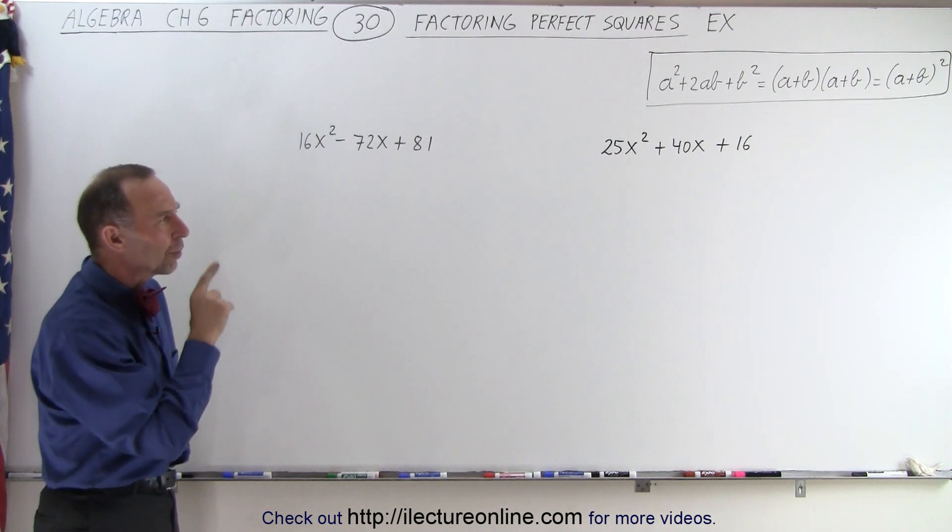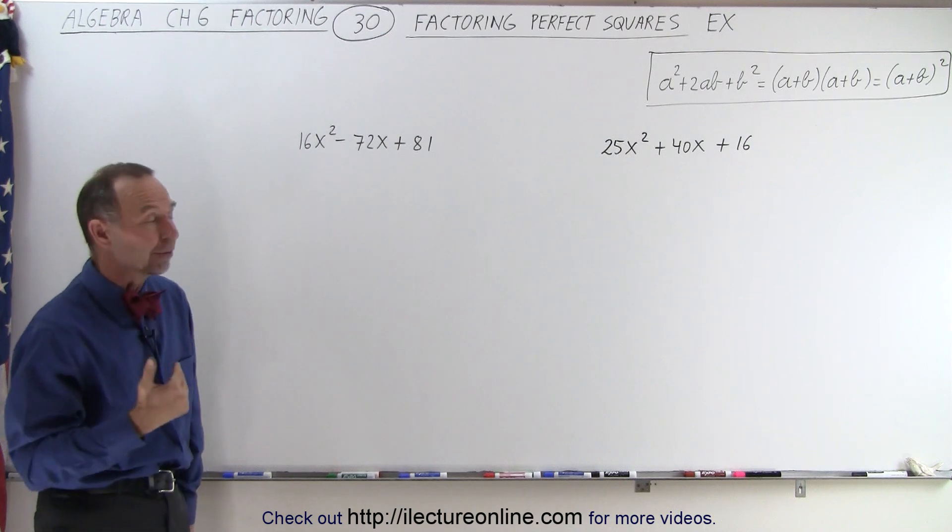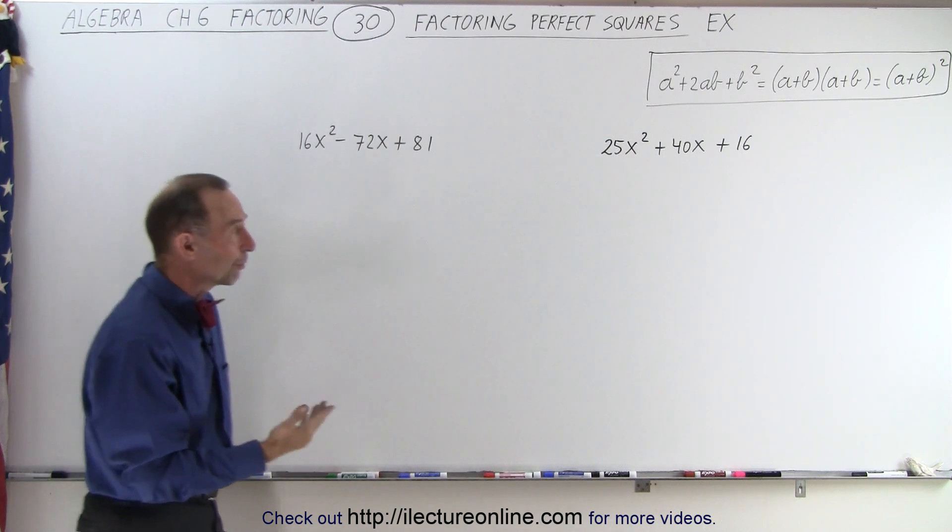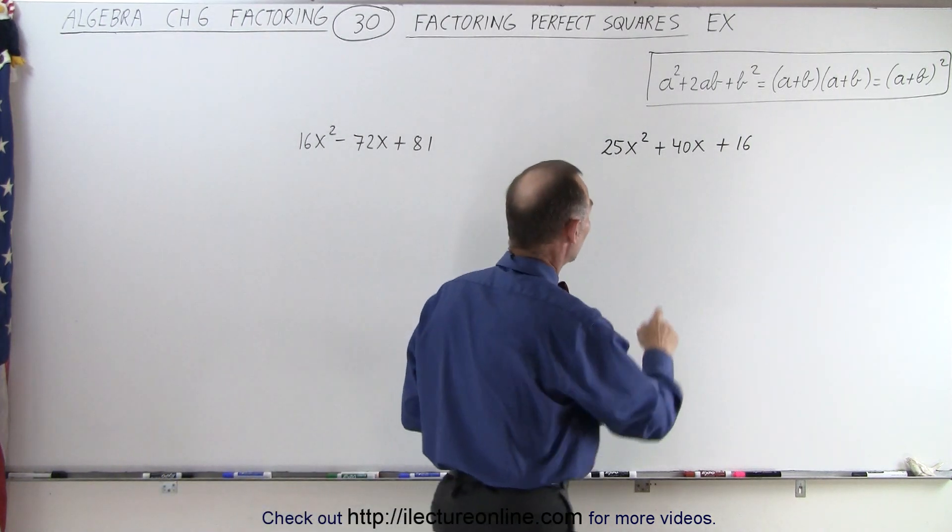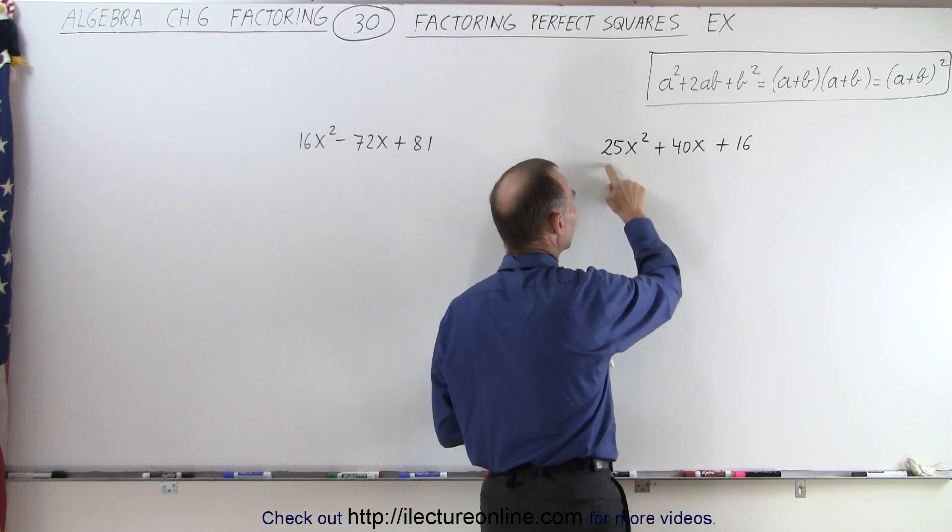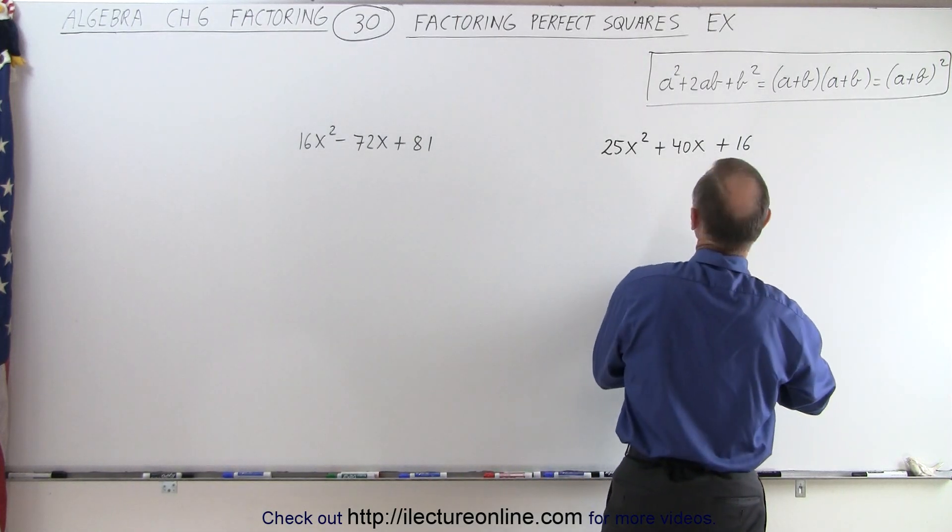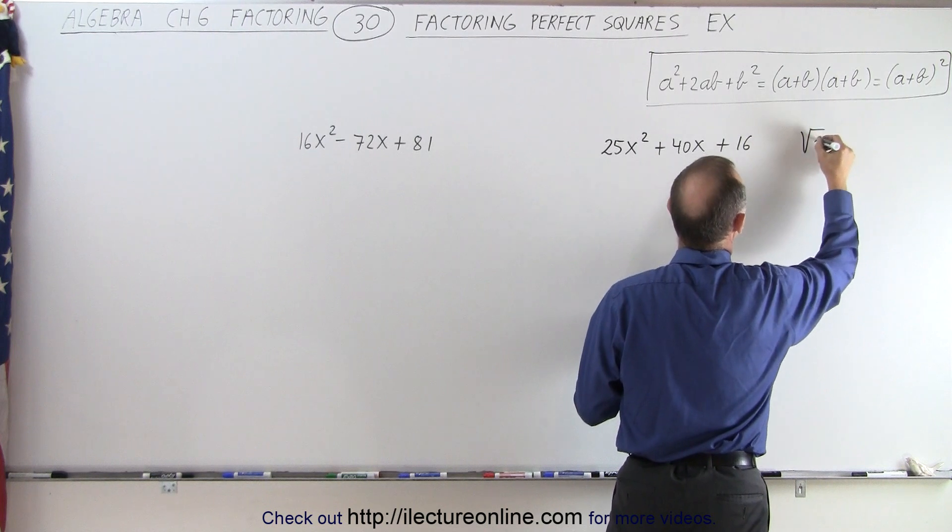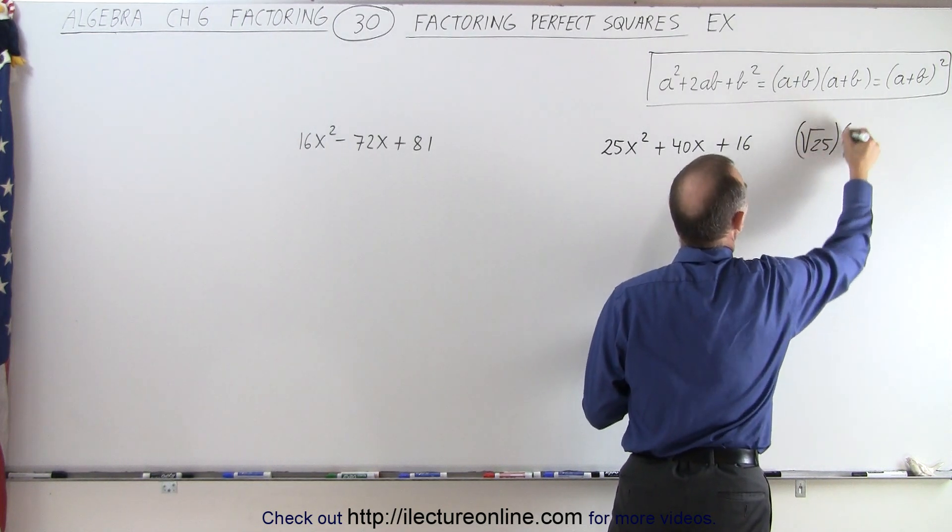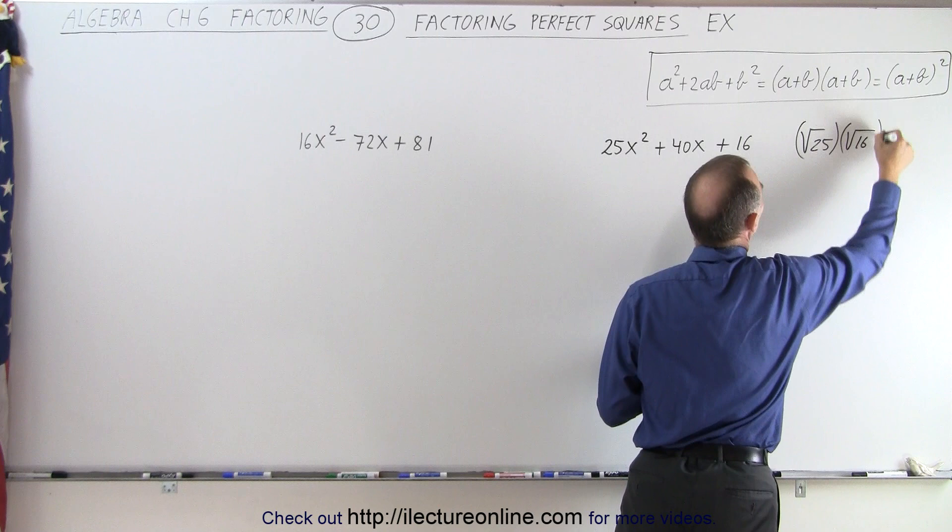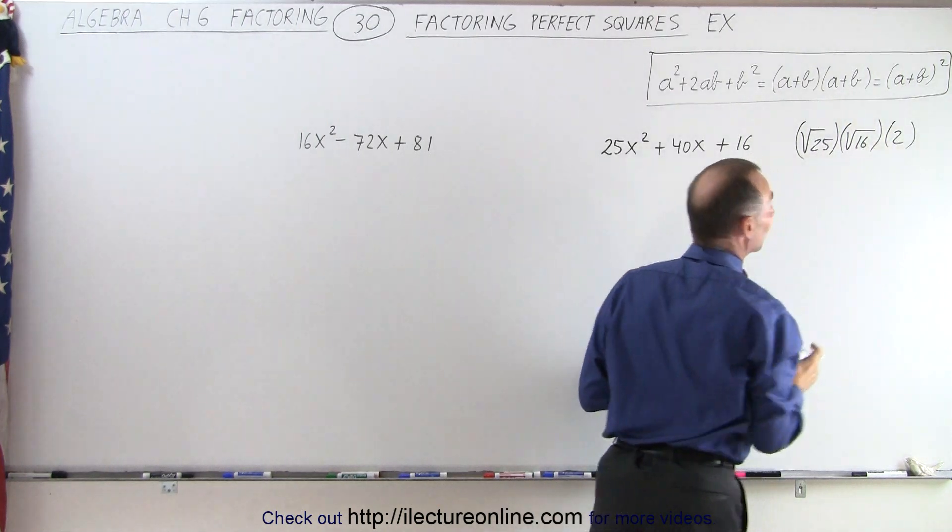Now, let's go ahead and see how we would then figure out if that is indeed a perfect square. We can factor it. So we take the square root of the number here, which is the square root of 25. We take the square root of 25 and multiply that times the square root of 16, and then multiply that times 2.